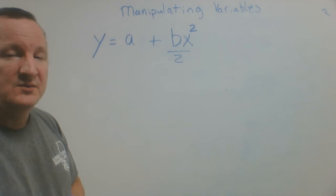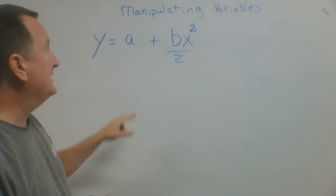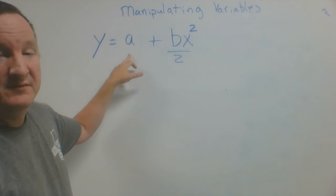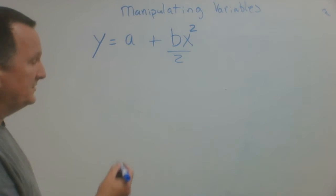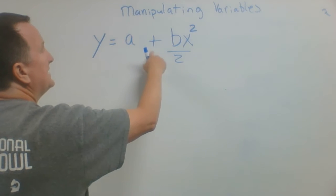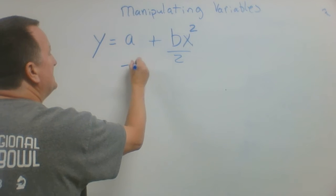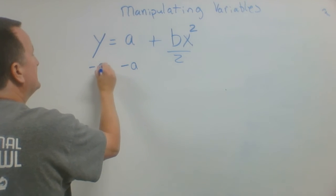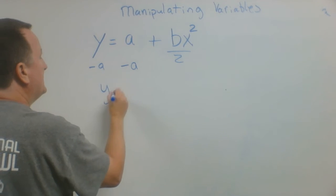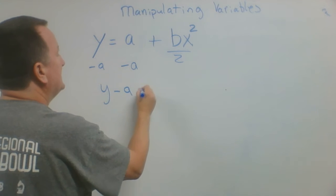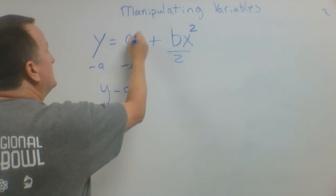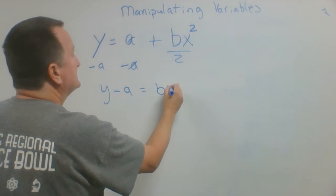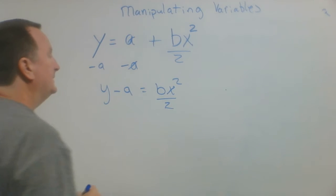The first thing I need to do is get rid of the a. This term is added to a, so I need to do the opposite, which is subtract a, and I get y minus a equals. The a's go away, and I have bx squared over 2.